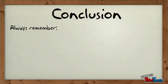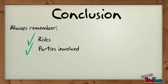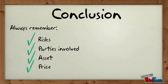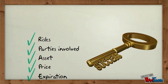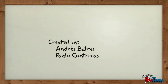In conclusion, you have to remember that the key to making a sound investment is to fully understand the risk, counterparty, underlying asset, price and expiration date associated with the derivative. The use of a derivative only makes sense if the investor is fully aware of their risks and understands the impact of the investment within a portfolio strategy. And that's what you need to know to understand the basics of a derivative.